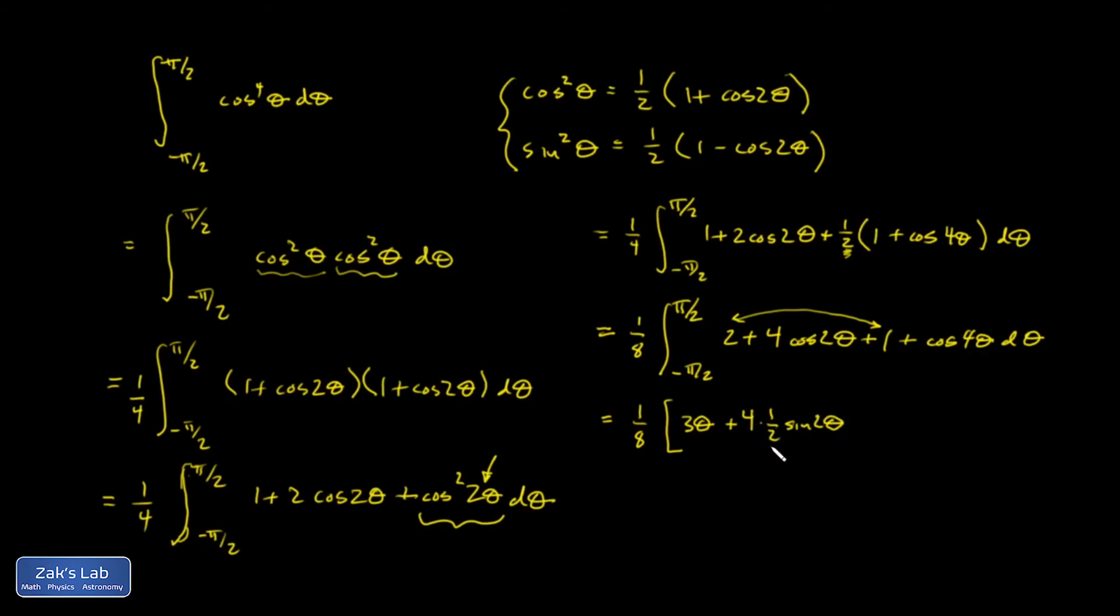Just guessing and checking real quick, if I differentiate sine 2 theta, I get cosine 2 theta times 2 because of the chain rule. That's why I had to put the one-half there. And then finally, the cosine 4 theta term gives me one-fourth sine 4 theta. I'm evaluating all that from negative pi over 2 to pi over 2.